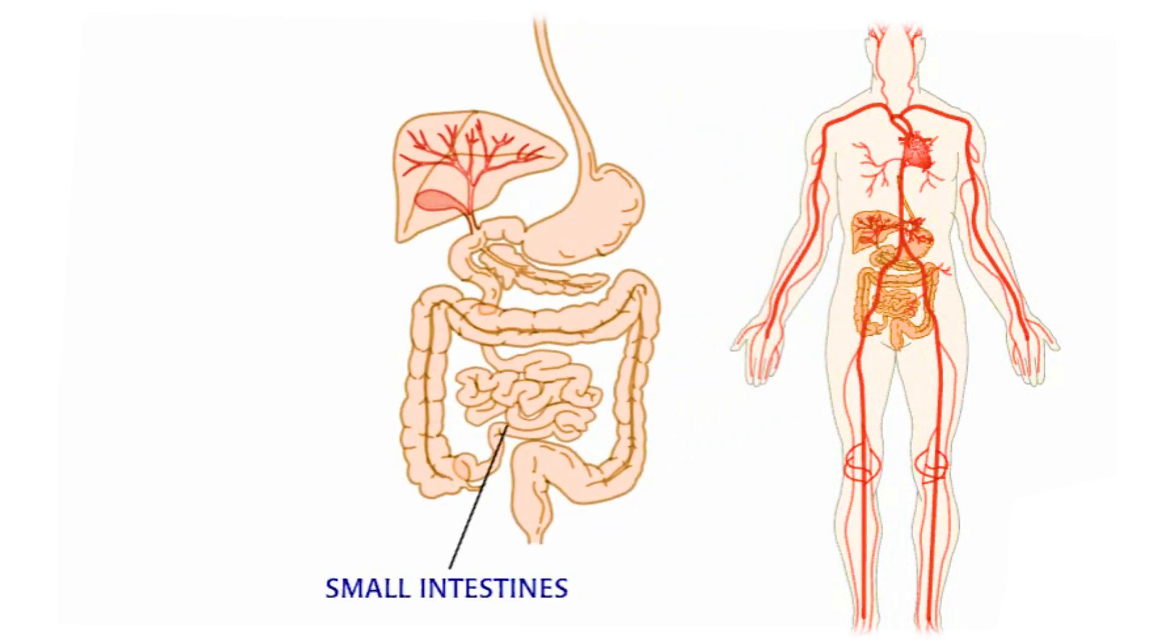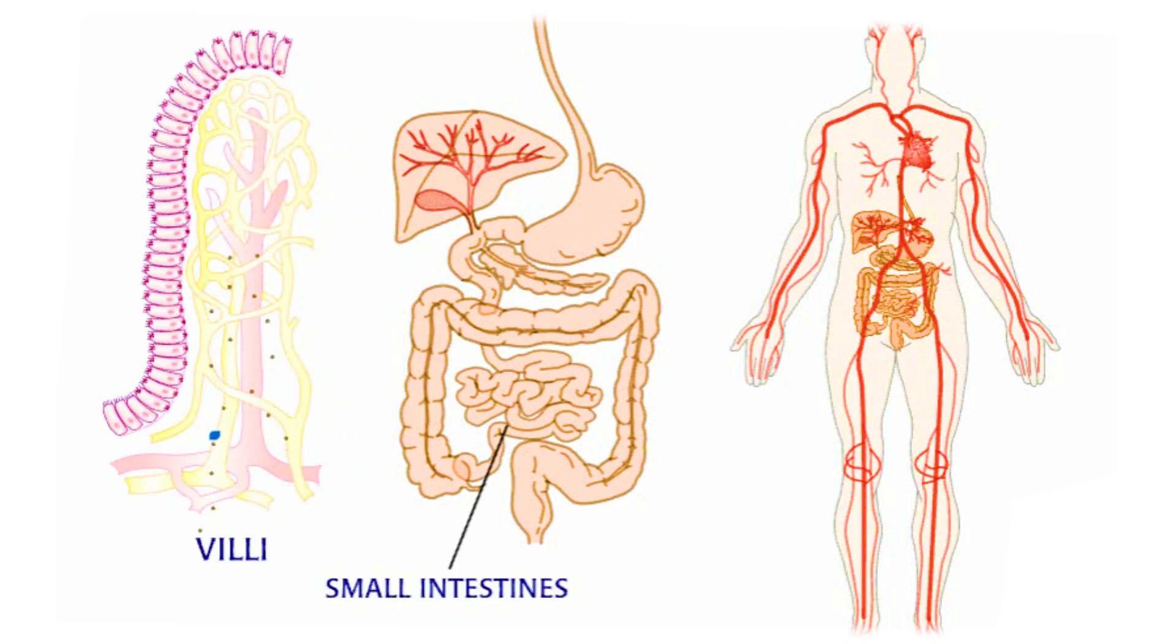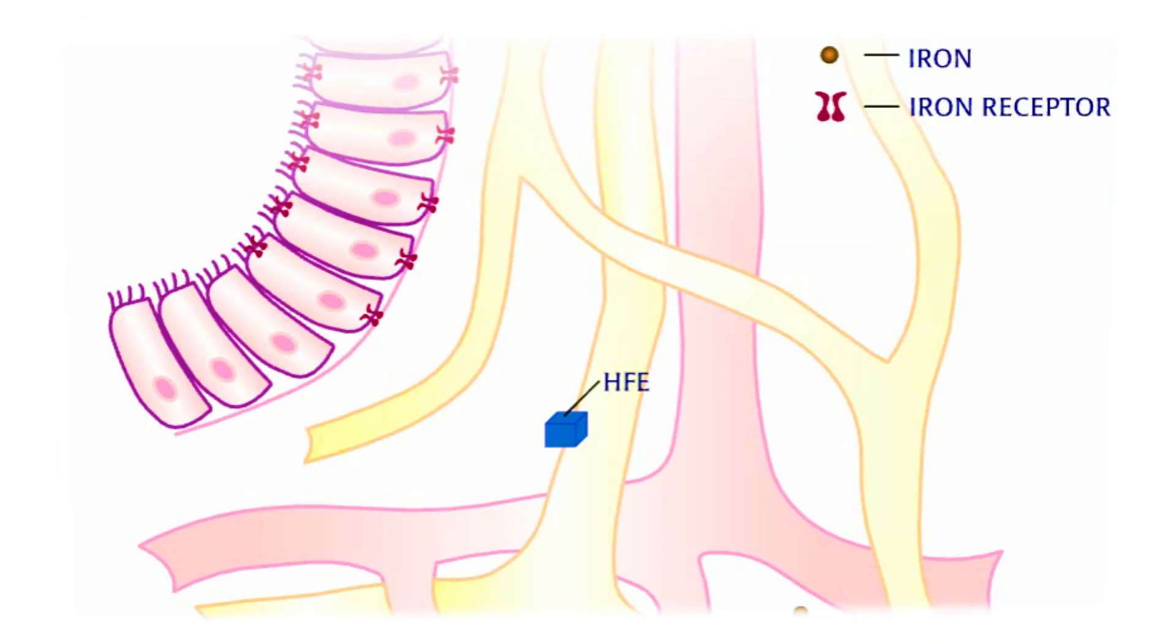HFE regulates iron in two different systems. The most important system is located in the small intestine where the body first encounters iron from food we eat. HFE is thought to help cells sense the amount of iron already present in the body.